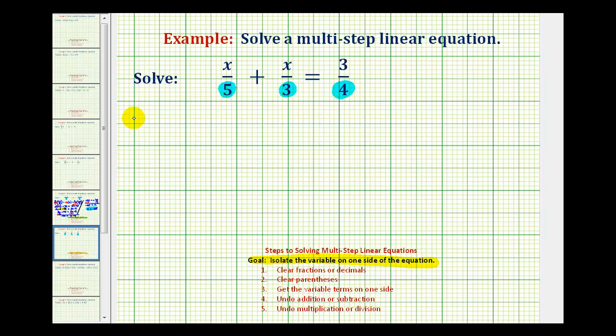I do want to point out if you have a hard time determining the least common multiple of the denominators, we can just multiply the denominators together. Notice that five times three times four is sixty. Now this product isn't always the least common multiple, but it will give us a common multiple that can be used to clear the fractions.